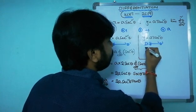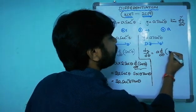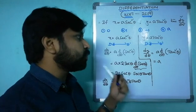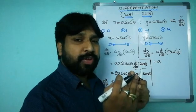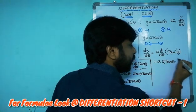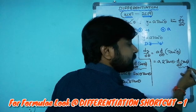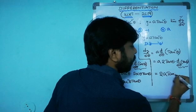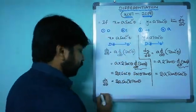For dy/dθ: applying d/dθ of tan²θ — no direct formula, treat tan θ as u, derivative is 2u. By chain rule, multiply by d/dθ of tan θ = sec²θ. So dy/dθ = 2a·tan θ·sec²θ. Now both dx/dθ and dy/dθ are ready.